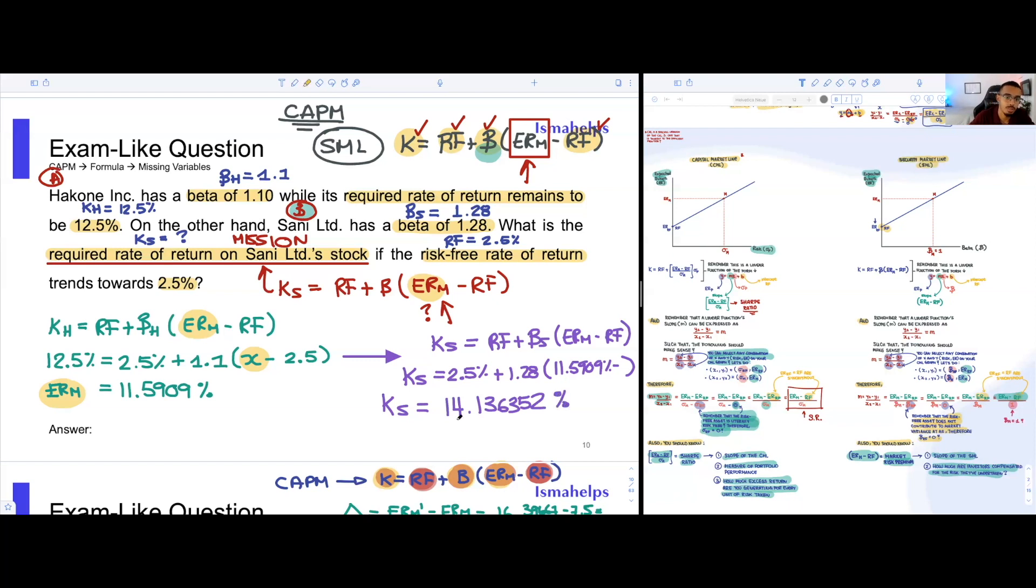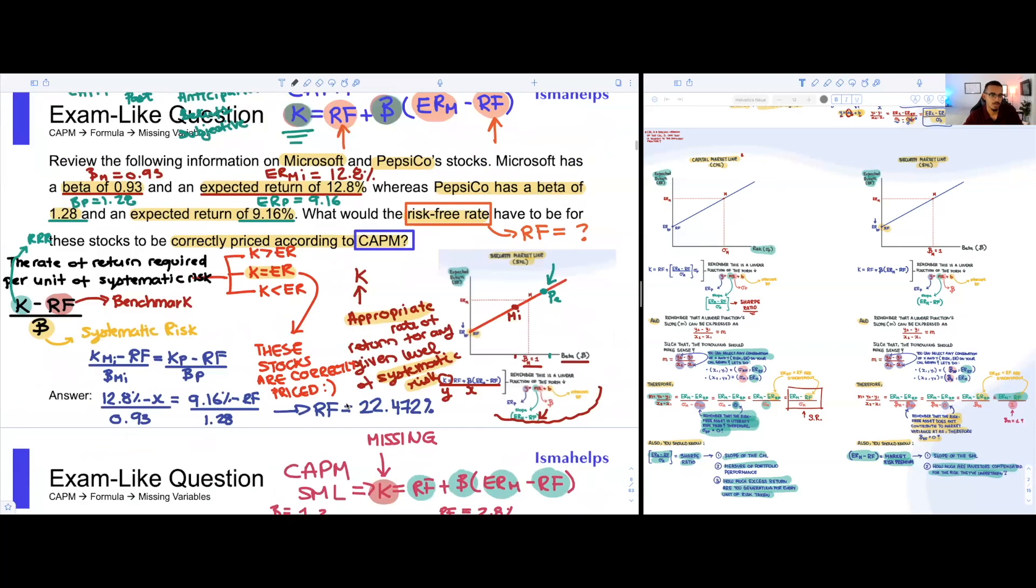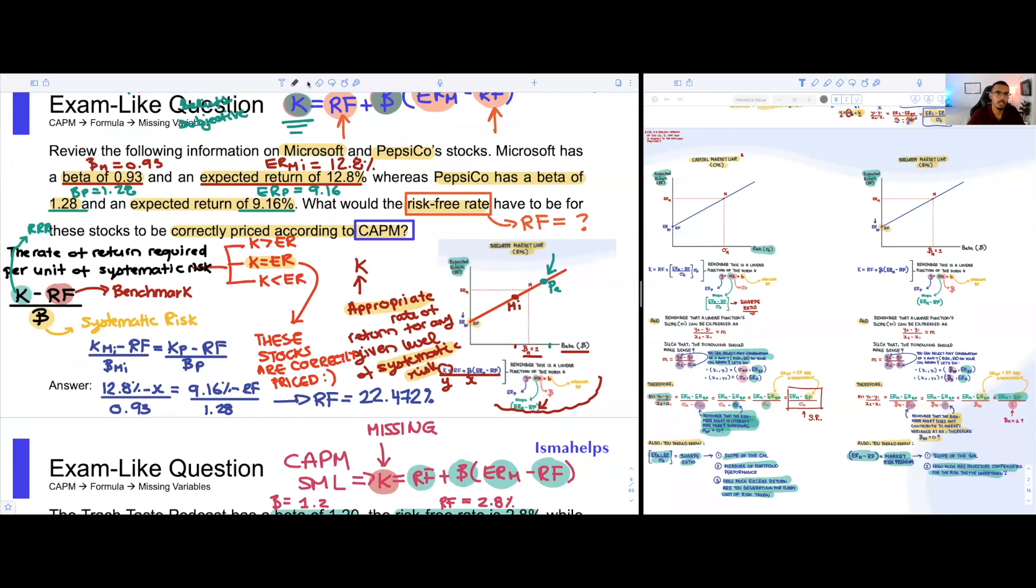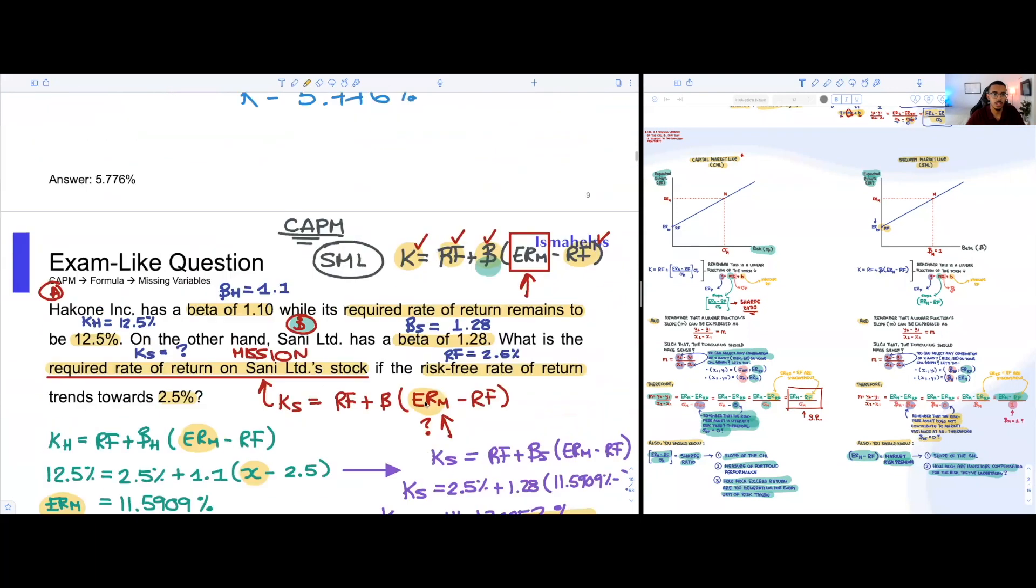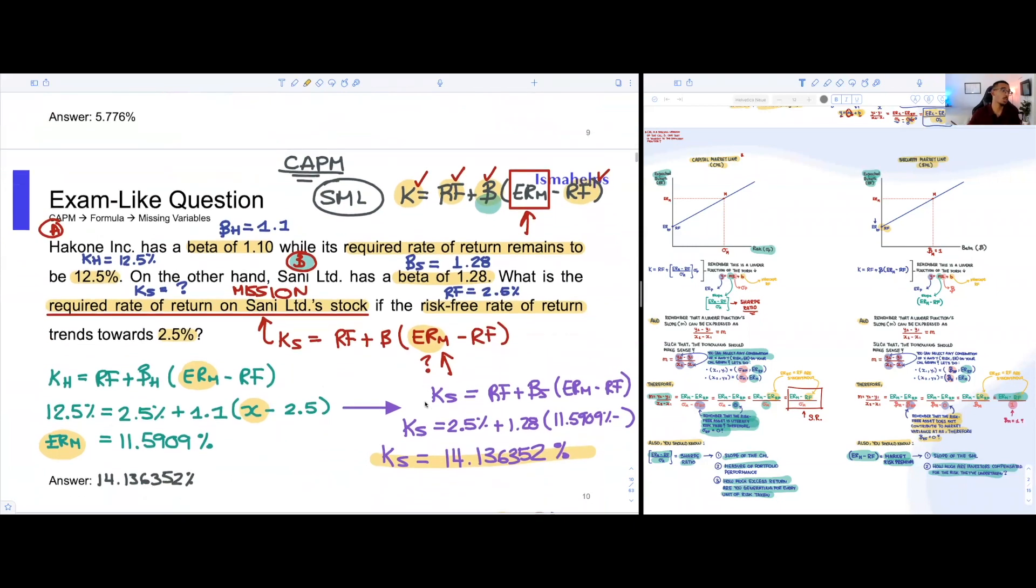And that would be your final answer, the required rate of return on Sani's stock. This is how you solve a very straightforward question, although it may not seem straightforward if it's the first time you're doing it. This is something that you may see on an exam. It has been on past exams, and that's why I'm giving you the exposure on how to solve it efficiently and quickly.